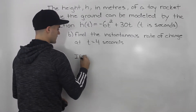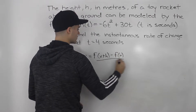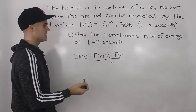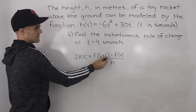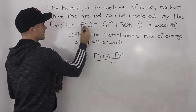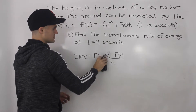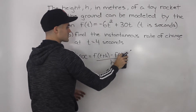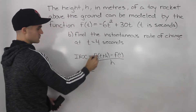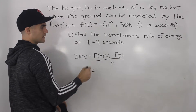The instantaneous rate of change in general is the difference quotient: f(x+h) minus f(x), all over h. In our specific case we're dealing with h(t), but the h in the function name and the h in the difference quotient are different things. So I'm going to change variables and let this be f(t), using t+h instead of x+h, so we're not confused. This gives us the general instantaneous rate of change at any t value, and then we plug in t equals four.